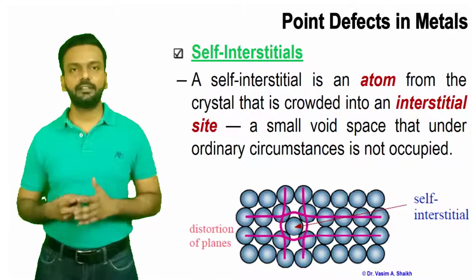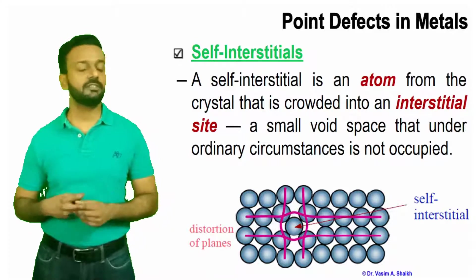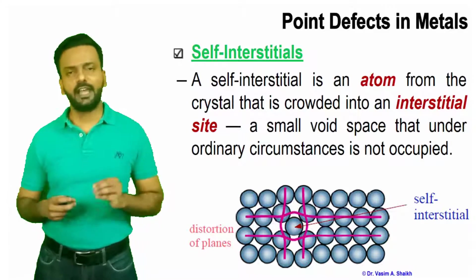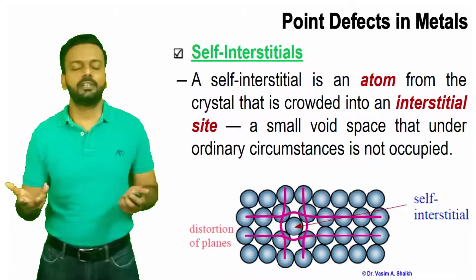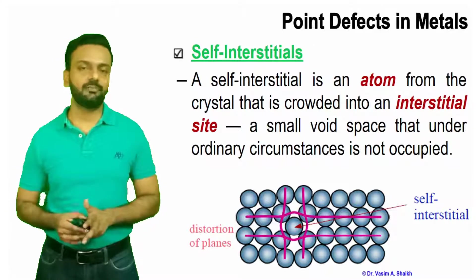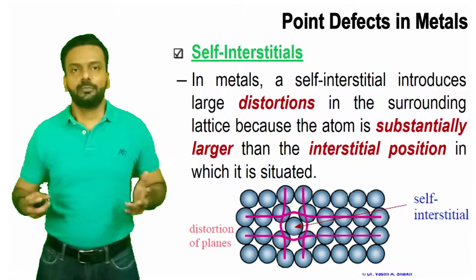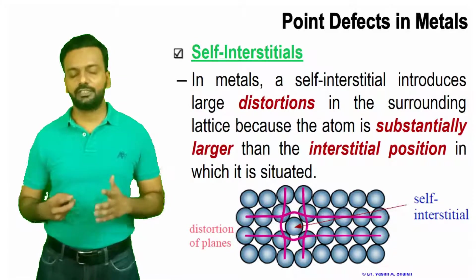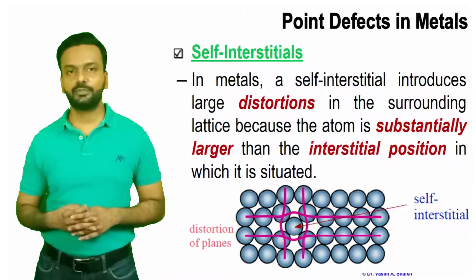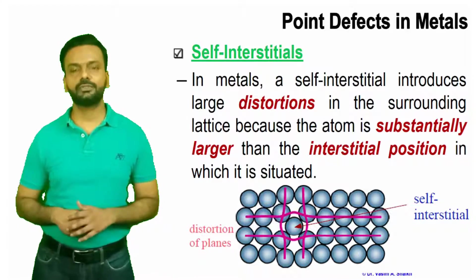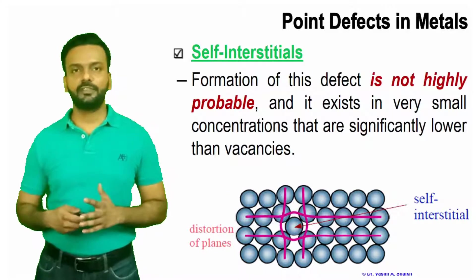A self-interstitial is an atom from the crystal that is crowded into an interstitial site — a small void or space that under ordinary circumstances is not occupied. An atom, whether smaller or bigger, goes and sits into that particular site through alloying or naturally from the crystal's own structure, and it creates a distortion. In metals, a self-interstitial introduces large distortion, as the atom is substantially larger than the interstitial position, creating a lot of distortion.